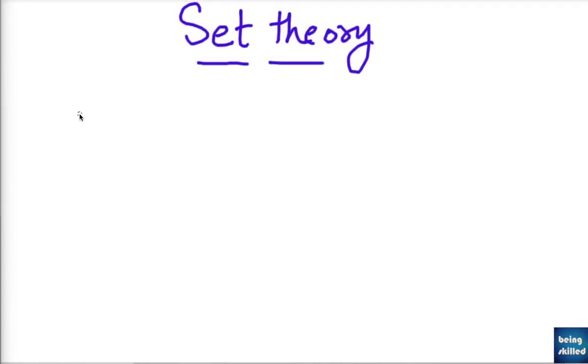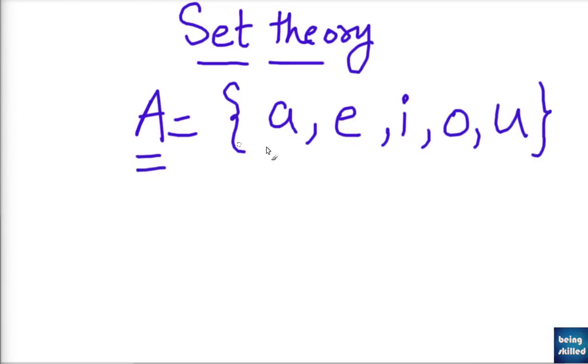Now we'll start with set theory. So what is set theory? Suppose we are having A equals to, in curly brackets, we have a, e, i, o, u. So we can say that A is the set of values, or set of vowels in English language. So we are having five elements, each of them is separated with a comma and they are enclosed within curly brackets.